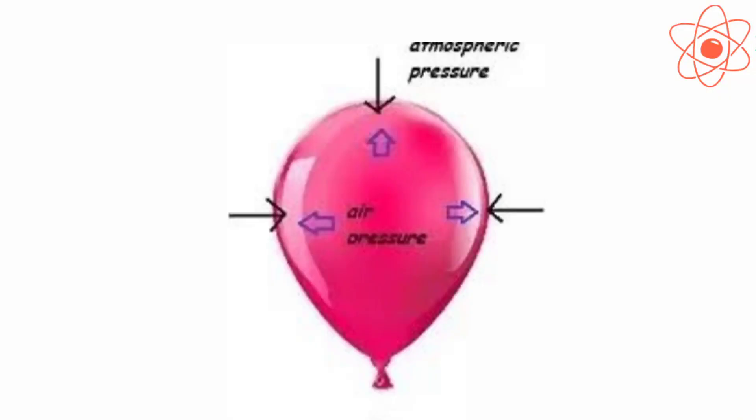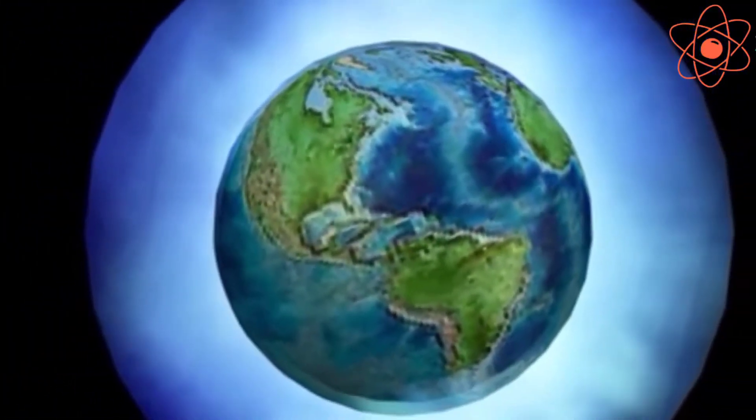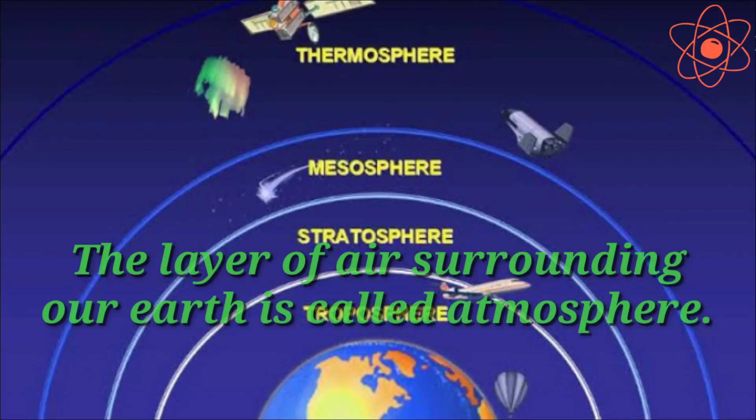This is because more gas in a given space applies more pressure. So we can say air exerts pressure in all directions. As we know that the Earth is surrounded by air, the layer of air surrounding our Earth is called atmosphere.